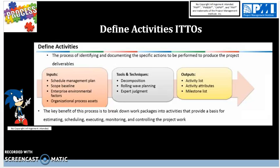Another output is Activity Attributes — the descriptive components of each activity in the activity list. This could include activity codes, predecessor activities, successor activities, logical relationships, leads and lags, resource requirements, imposed dates, constraints, assumptions, and also risks. This ties into the scope statement because risks, assumptions, and constraints are all part of the activity attributes.